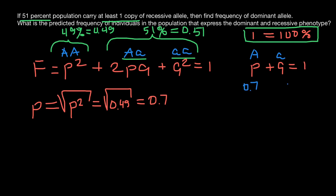Now we know the frequency of the dominant allele P is 0.7, and we instantly know the frequency of the recessive allele Q, which is 1 minus 0.7, giving us Q equals 0.3. So we have found the frequency of both the dominant and recessive alleles.